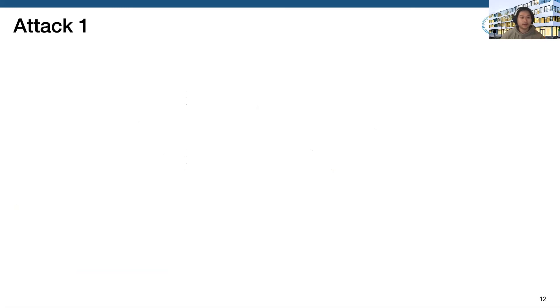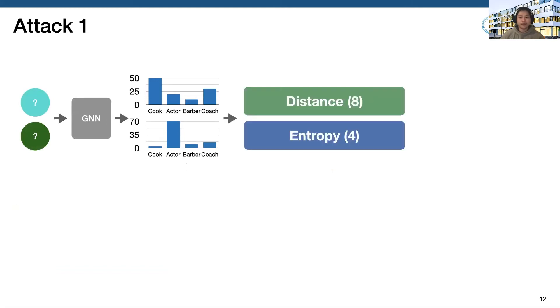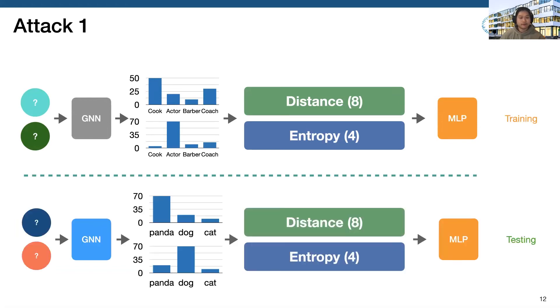Concretely, the attack procedure is as follows. We can train the shadow GNN model, and then for each node pair, we can input them into the shadow model and get a posterior. Then we can generate a feature vector and put that into an attack model, which is an MLP. And the output is whether the two nodes are linked or not. Then we change into the testing phase. Here we also extract two nodes from the target dataset. We query the target model and get a corresponding posterior. And we also generate this feature as we did in the training phase. Then we put the feature to the attack model and predict whether the two nodes from the target dataset are linked or not.